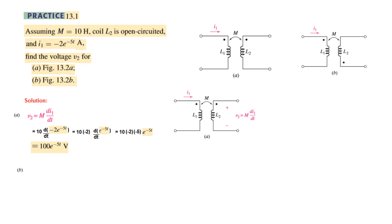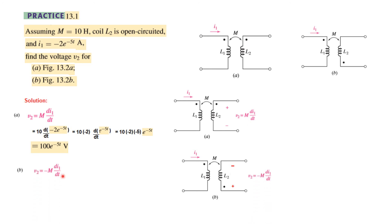For part B: the current is again entering the dotted terminal, but here the dot is at the bottom. Therefore the bottom will have a positive sign, making the sign of V2 negative. Since everything else is the same, the answer is just with a negative sign. Plugging in the values, you get −100e^(−5t) volts. I hope this gives you an understanding of how to solve circuits with mutual inductance. Thank you.